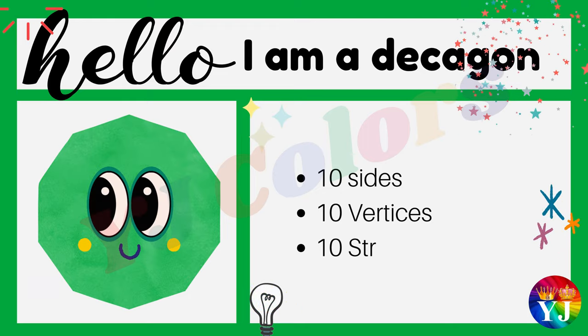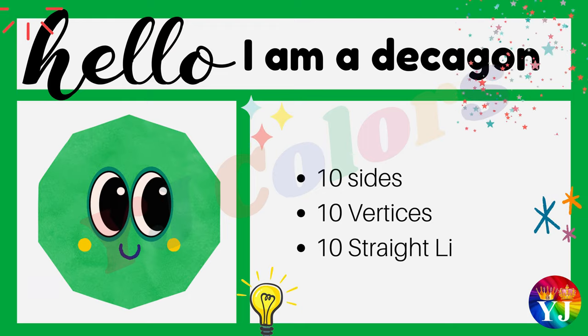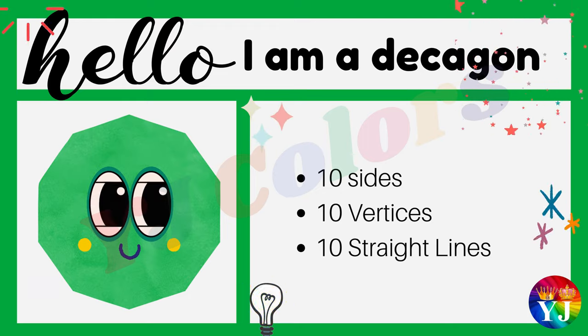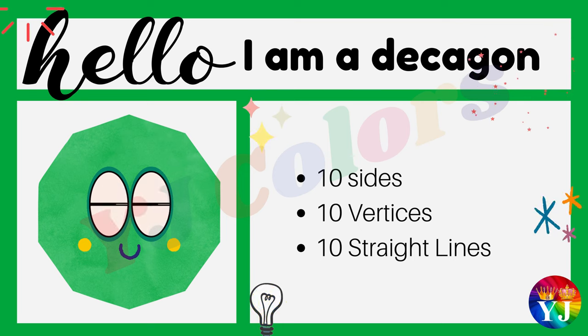Hello, I am a hexagon. I have seven sides, eight sides, ten vertices and ten straight lines.